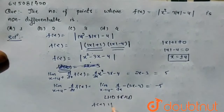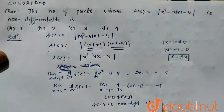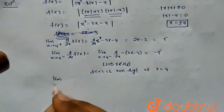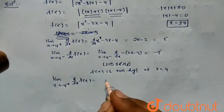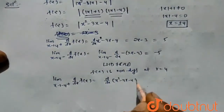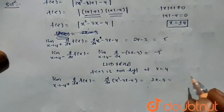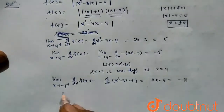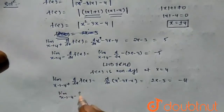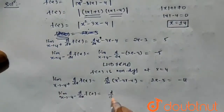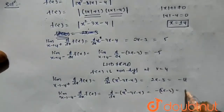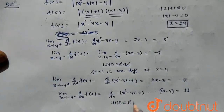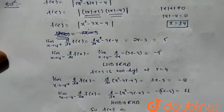So f(x) is non-differentiable at x = 4. Similarly, at x = -4: the limit as x tends to -4⁺ of d/dx of f(x) equals d/dx of (x² - 3x - 4) which is 2x - 3. On putting -4, it equals -11. And the limit as x tends to -4⁻ of d/dx of f(x) equals d/dx of (-(x² - 3x - 4)) which equals -(2x - 3). On putting the limit, it is 11. Hence left-hand derivative is not equal to right-hand derivative, so f(x) is non-differentiable at x = -4.